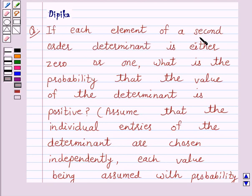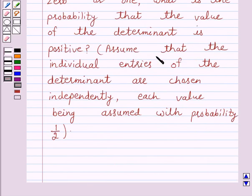If each element of a second order determinant is either 0 or 1, what is the probability that the value of the determinant is positive? Assume that the individual entries of the determinant are chosen independently, each value being assumed with probability 1 over 2.